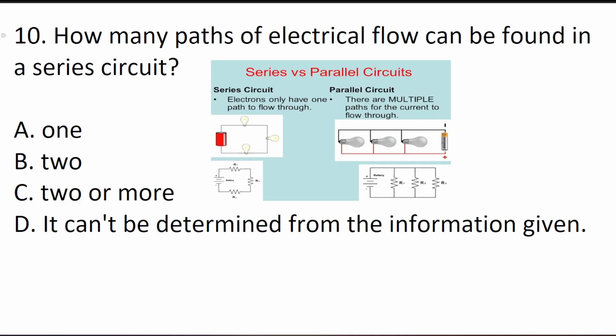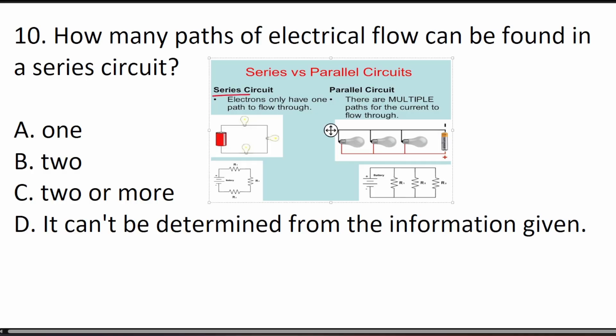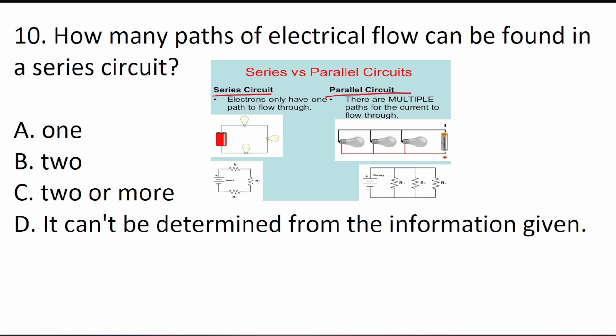Question 10 asks: how many paths of electrical current flow can be found in a series circuit? In a series circuit, there is only one path through which electrons can flow, whereas in a parallel circuit there are multiple paths. The answer is A — only one path.